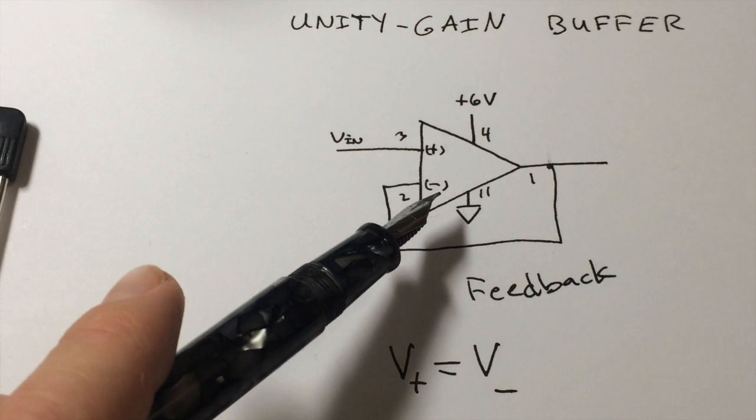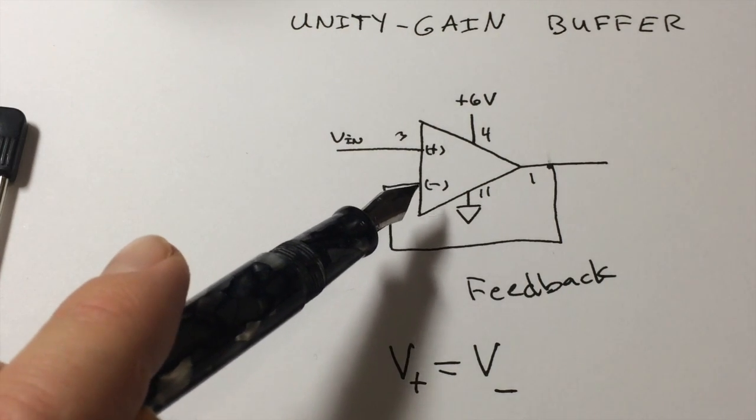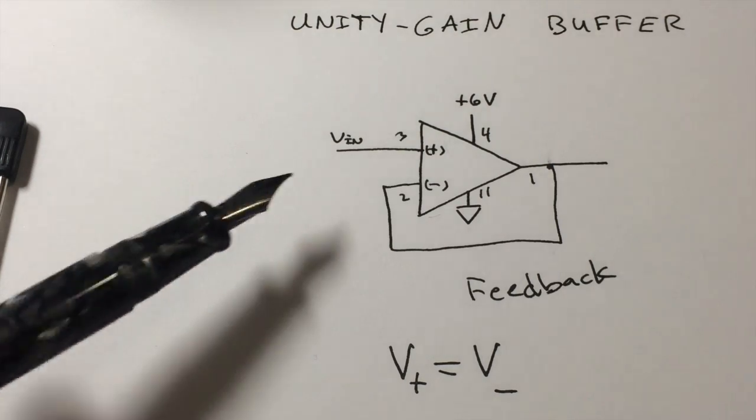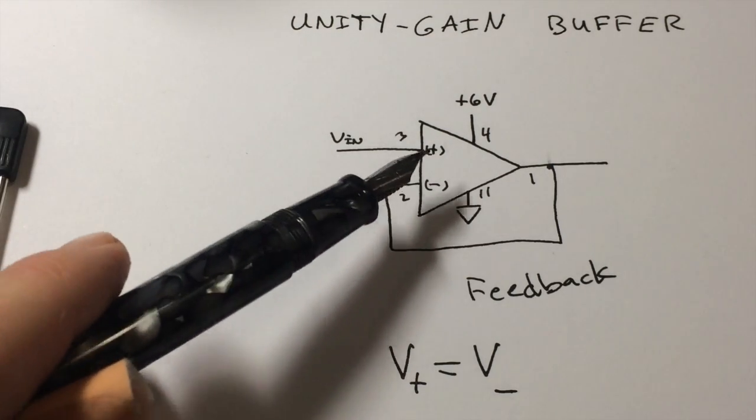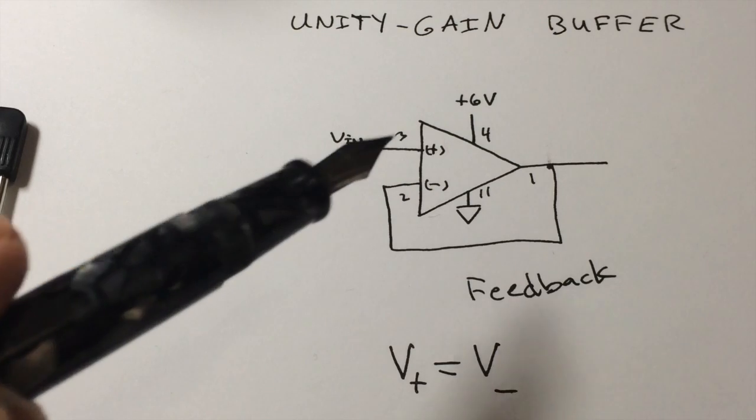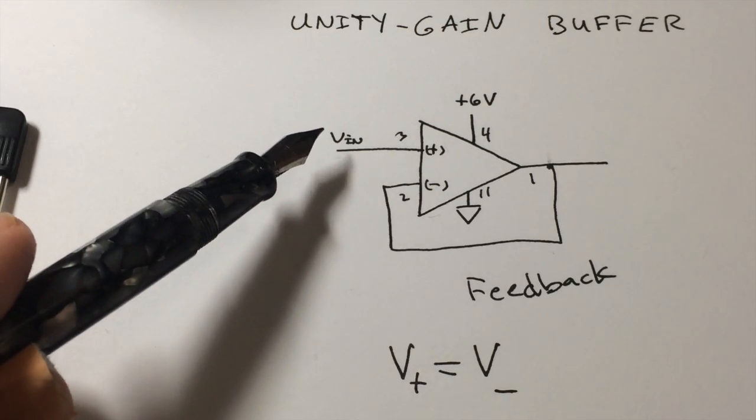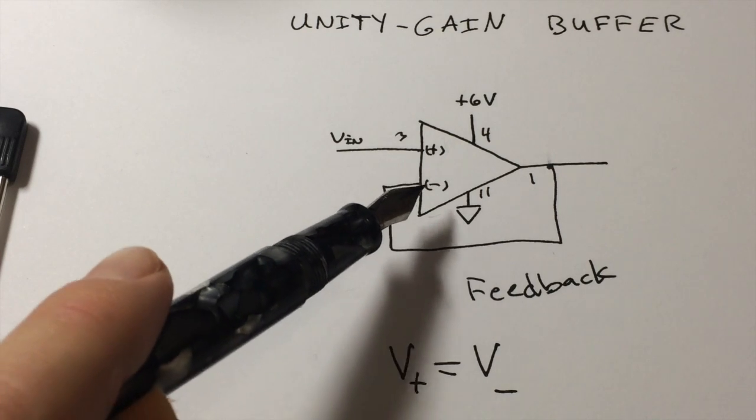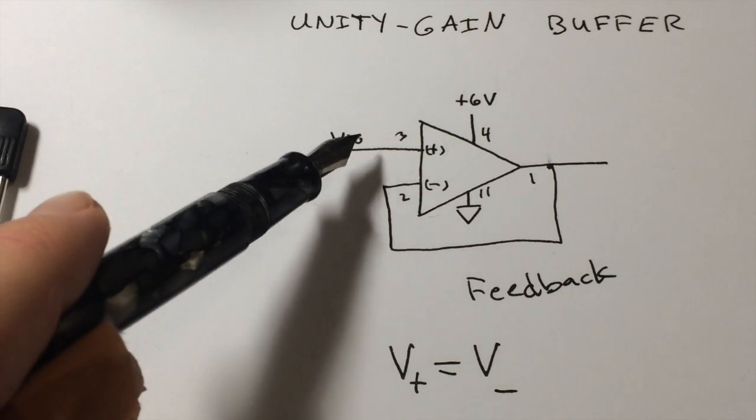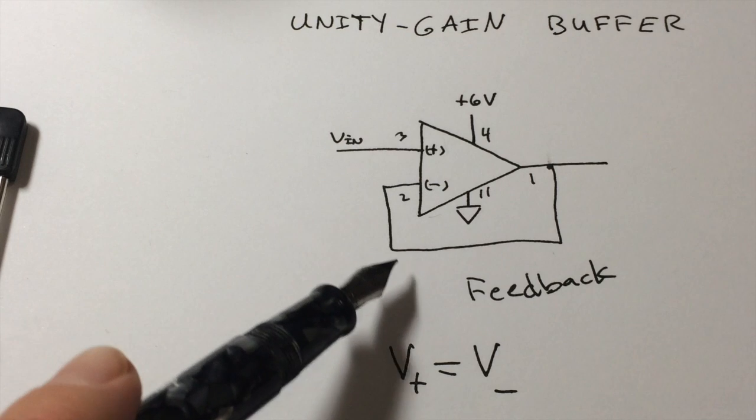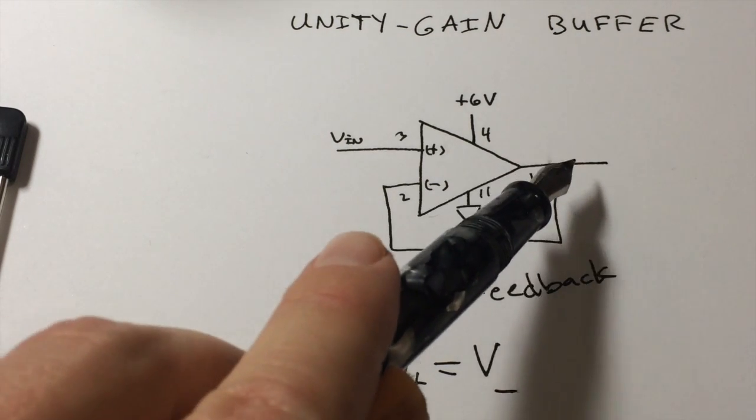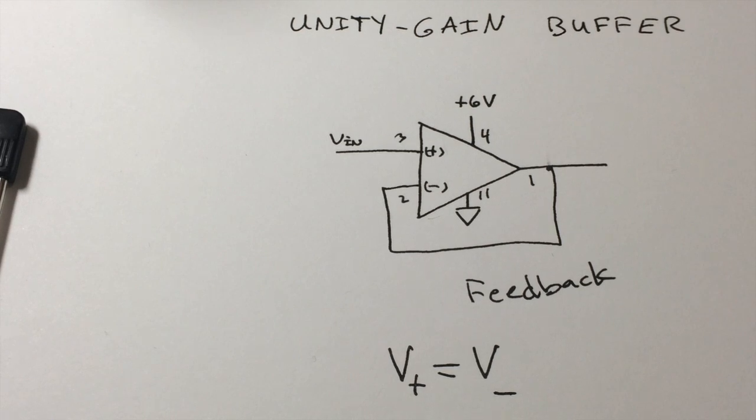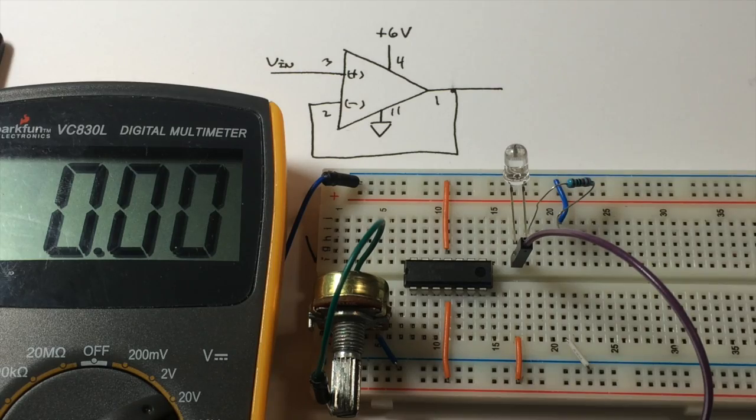What's going to happen is this is eventually going to balance out to the point where our voltage at the inverting pin is the same as our voltage at the non-inverting pin. Therefore, because the voltage here is the same as it is here, because we have this wired together, the output voltage will also be the same.